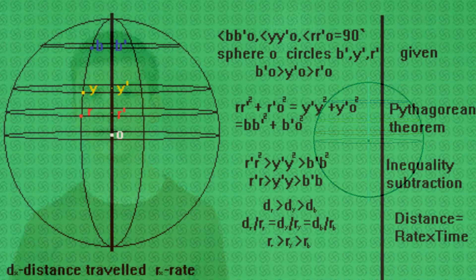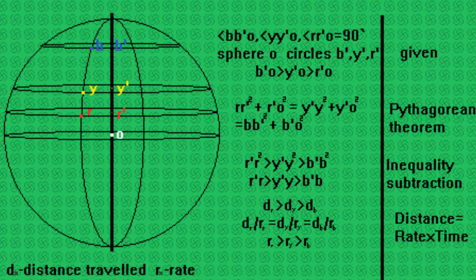The Coriolis force is caused by the fact that the speed of a rotating sphere varies from place to place. To demonstrate this, you had a rotating sphere and several points along the sphere. Points near the equator have to travel farther than points farther away from the equator. And since every single point has to travel around the sphere in the same period of time, points near the equator have to travel faster than points farther away from the equator.